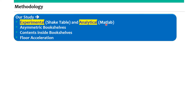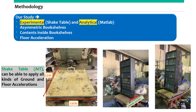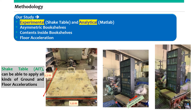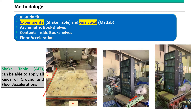We also conducted an analytical study using MATLAB software. Moreover, three effects were considered: asymmetric bookshelves, content inside the bookshelves, and floor accelerations. This is the shake table at AIT, as we can see from this video.